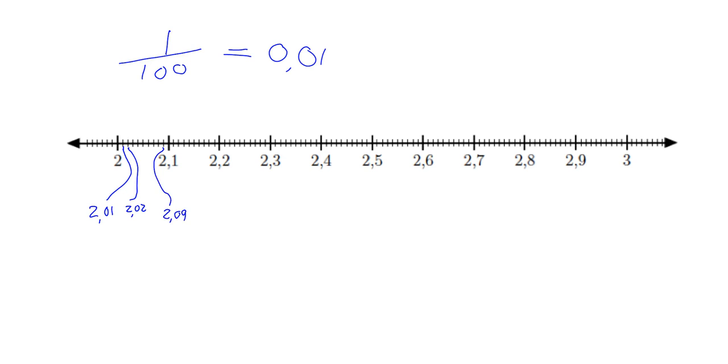Now remember what comes after 2.09? Well it's going to be 2.10, which is your 2.1 or 2.10, you can write it either way. And after that, another one along, this one will be 2.11, and you'll go on like that all the way through.